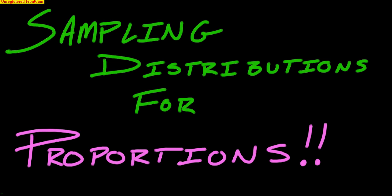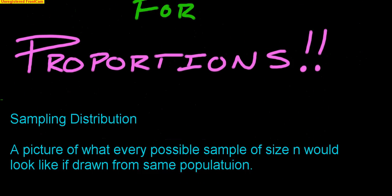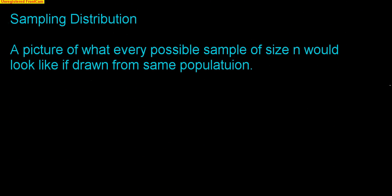This video is about sampling distributions, specifically for proportions. Let's do a quick recap. A sampling distribution is simply a picture of what every possible sample of size N would look like if it was drawn from the same population. We talked about what these sampling distributions look like, and now we're going to specifically talk about one that is for proportions.